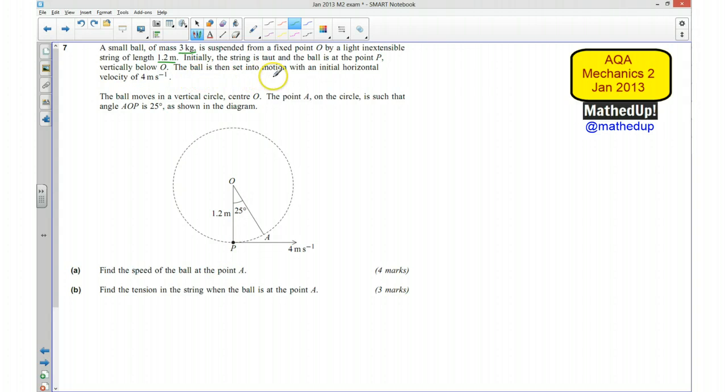The ball is set into motion with an initial horizontal velocity of 4 meters per second. The ball moves in a vertical circle, center O. The point A on the circle is such that angle AOP is 25 degrees. Part A says find the speed of the ball at point A.